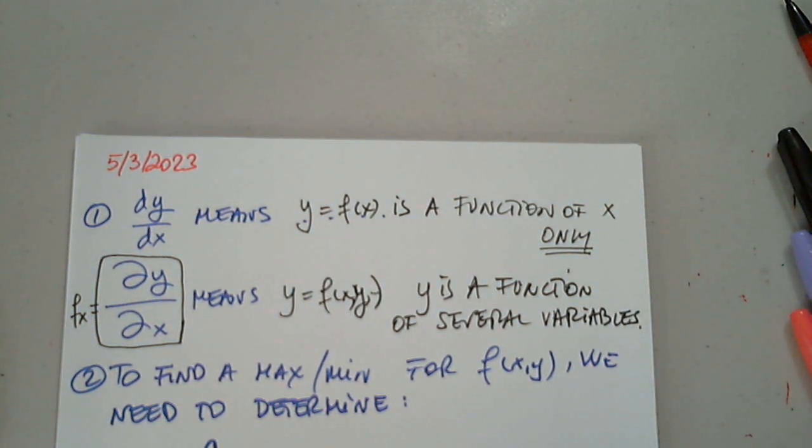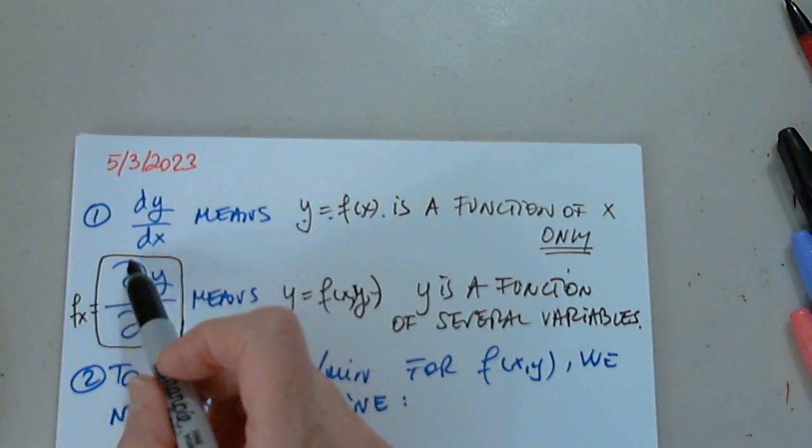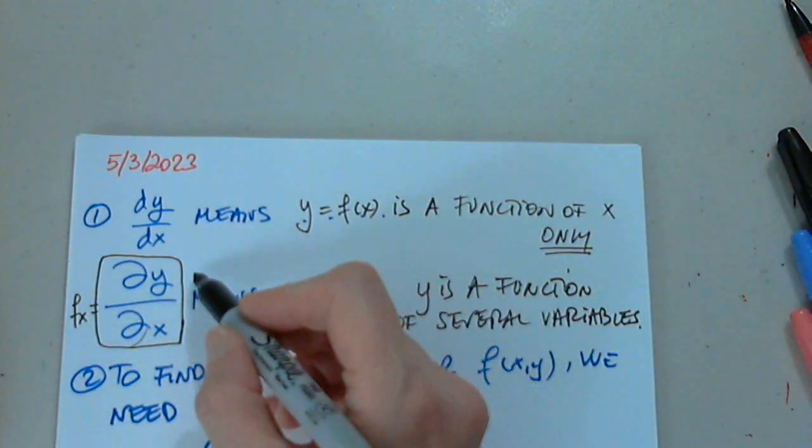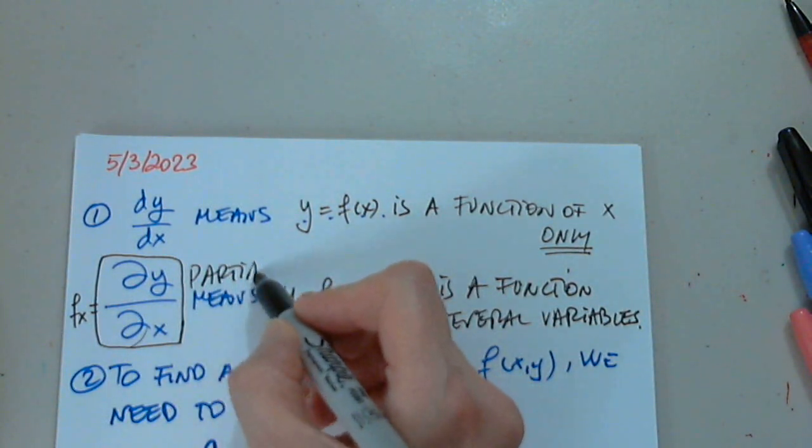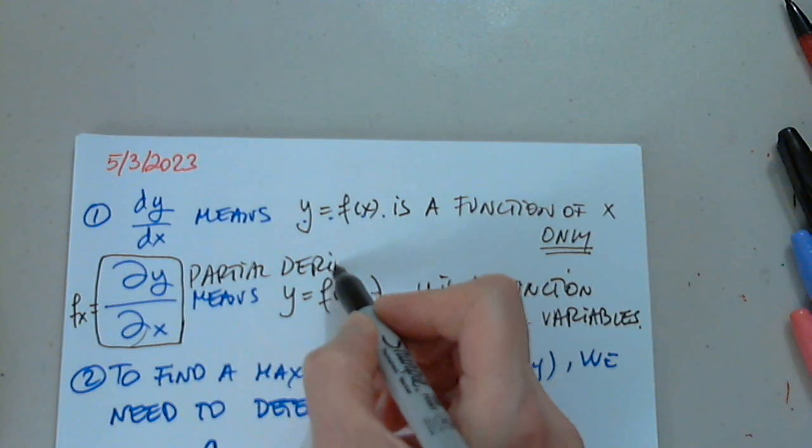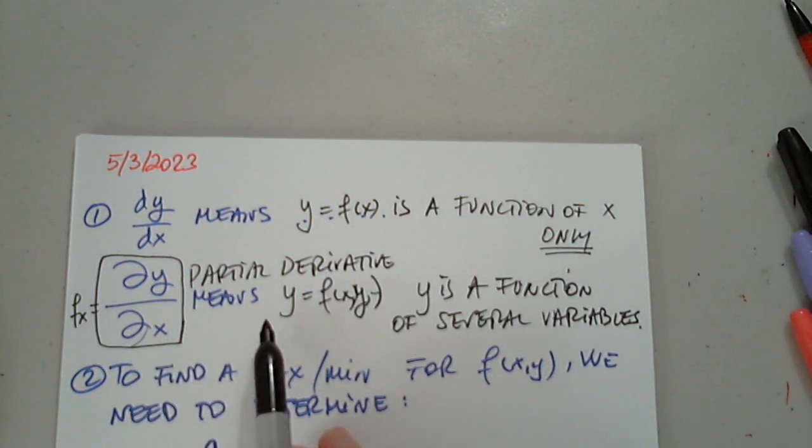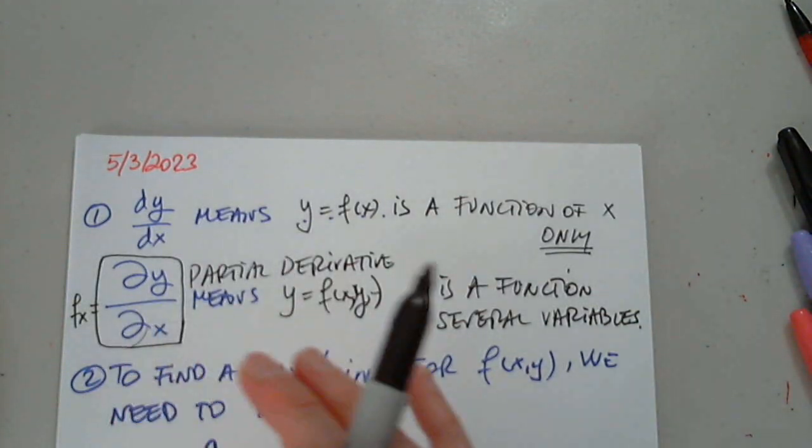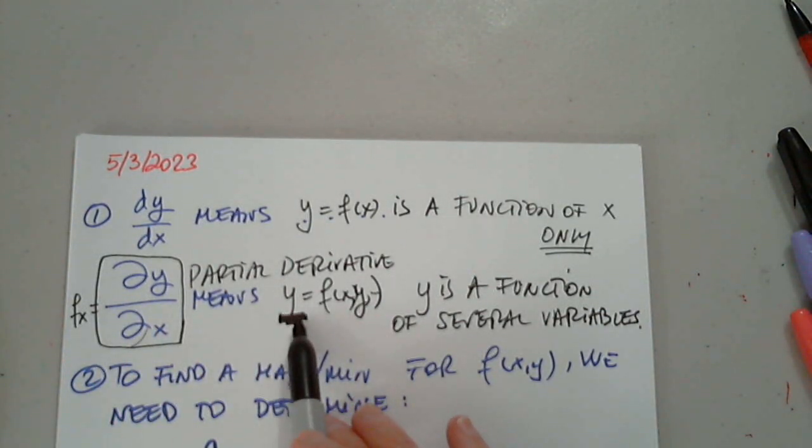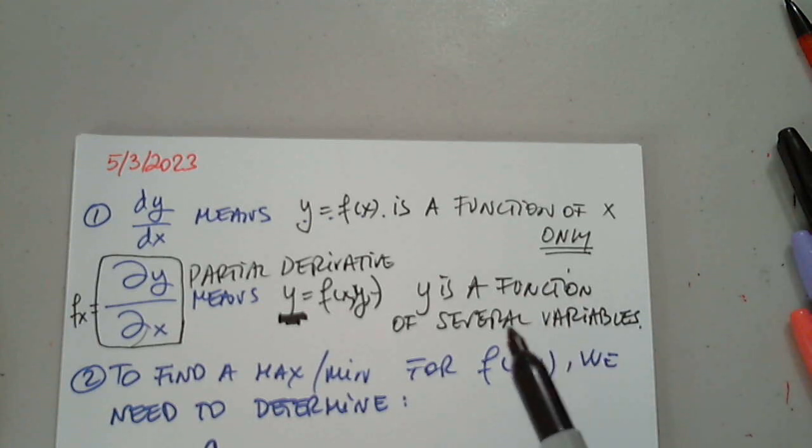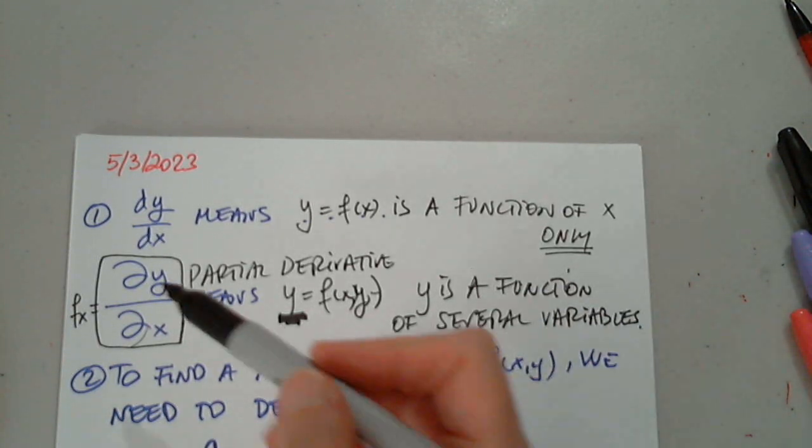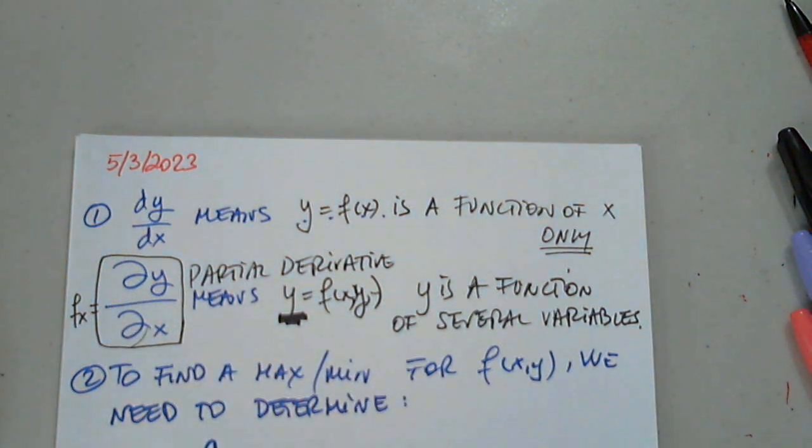So this means that y is a function of several variables. Definitely not just one, for sure. Otherwise, we will never use this symbol. Yes, it's a partial derivative. Perfect. But please remember, this symbol tells us immediately that the function, or y, must be a function of several variables. At least one other, otherwise we will never use this symbol. Perfect.